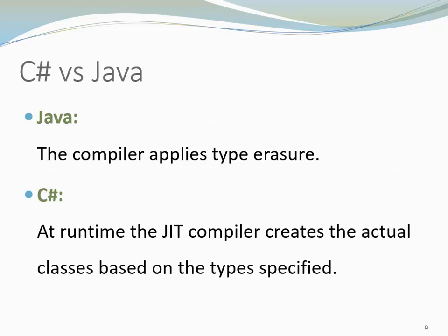C# implemented generics in a different way. In C#, the JIT compiler creates the actual classes based on the types specified. That means if you use in your code a list of circles and a list of squares, two separate classes are generated: a circle list and a square list. Creating these type-specific classes allows C# to efficiently use both value types and reference types as type arguments.